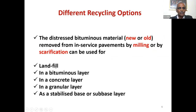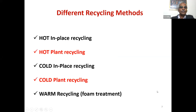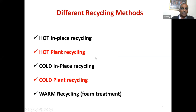We can dump the distressed bituminous material in landfills, use it in a bituminous layer that is reused, put it in a concrete layer, put it in an aggregate layer mostly by stabilization, or try to use it directly as a granular layer. There are various recycling options available. We can do it in hot or cold conditions, and we can do it in place or remove the material to a plant, process it, and bring it back to be placed. Accordingly, you have hot in-place recycling, hot plant recycling, cold in-place recycling, and cold plant recycling.